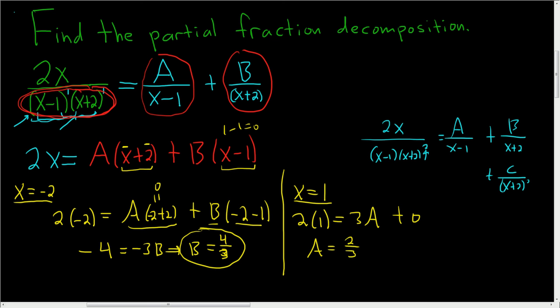So the final answer would be just A, so 2 thirds, so 2 thirds over x minus 1 plus, and B. So B is 4 thirds, so 4 thirds over x plus 2.